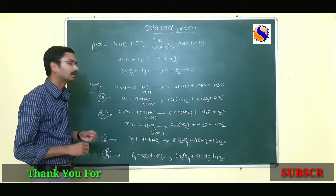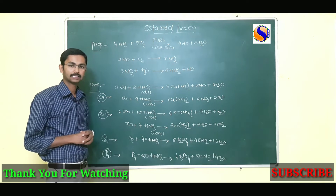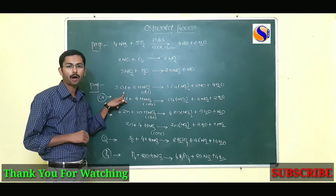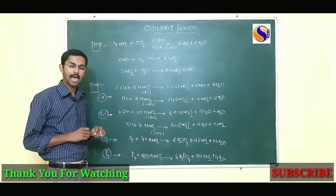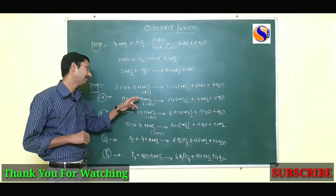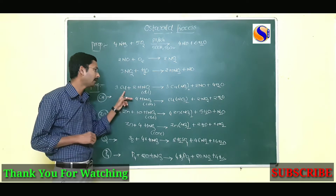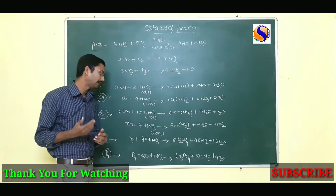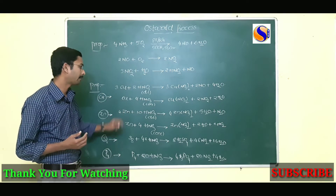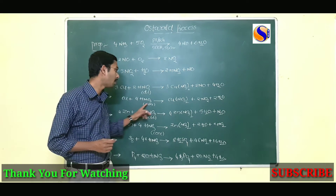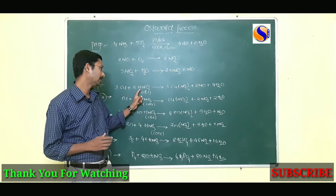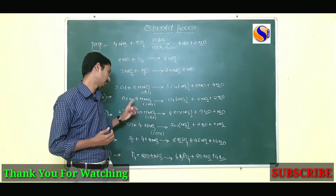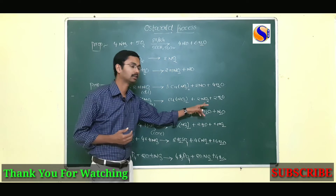The formed HNO₃ has different chemical properties. In the first reaction with copper: if you take diluted HNO₃, copper forms nitric oxide with HNO₃. If you take concentrated HNO₃, copper gives nitrogen dioxide — meaning more oxidation occurs. Concentrated HNO₃ oxidizes copper more powerfully than diluted HNO₃ to form nitrogen dioxide.